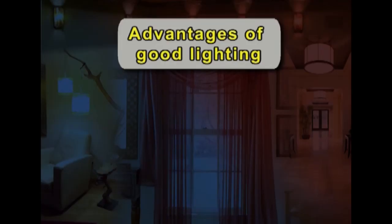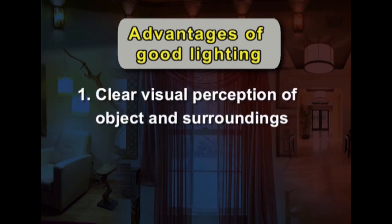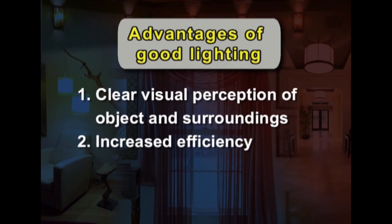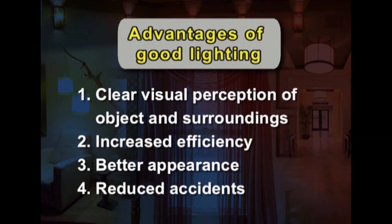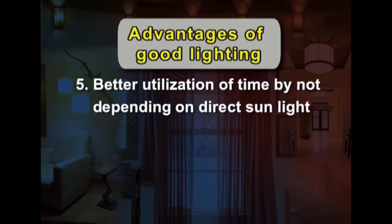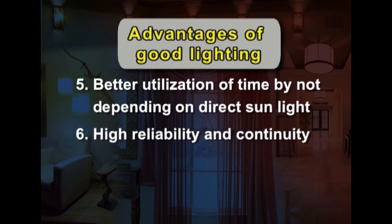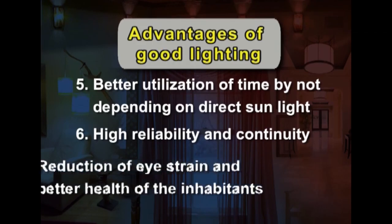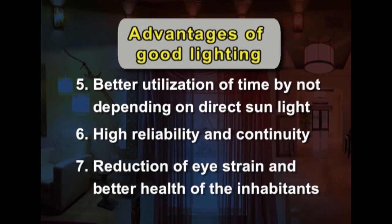The uses and advantages of good lighting: first, clear visual perception of objects and surroundings; second, increased efficiency; third, better appearance; fourth, reduced accidents; fifth, better utilization of time by not depending on direct sunlight; sixth, high reliability and continuity; and seventh, reduction of eye strain and better health of the inhabitants.